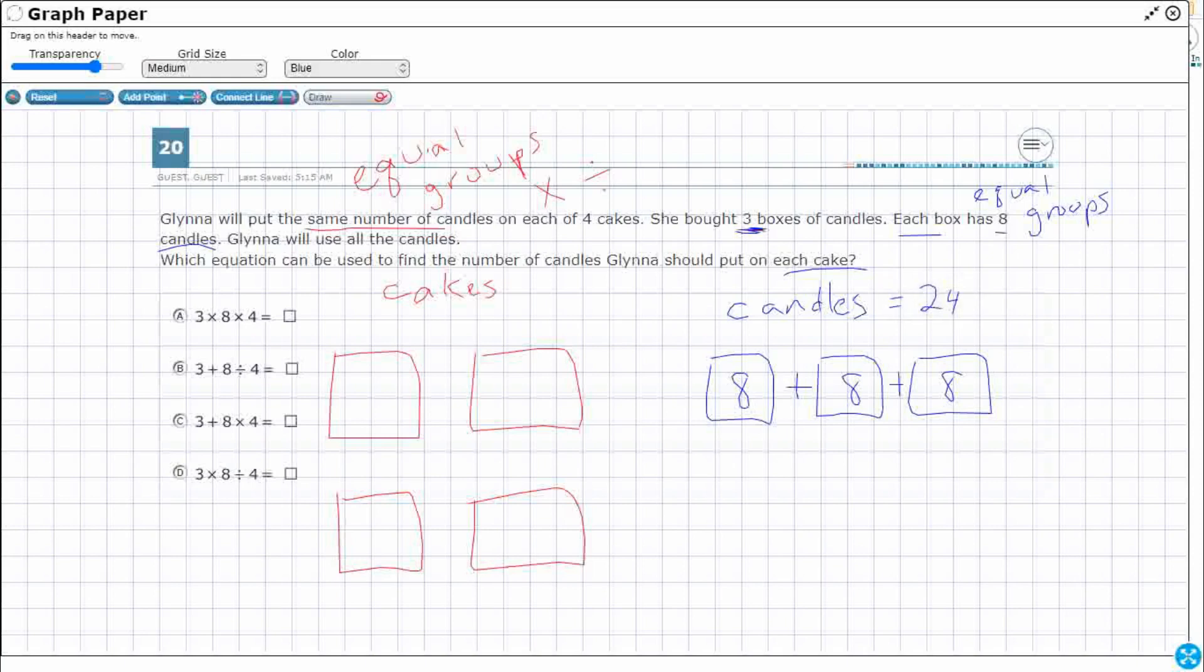If I want to do a strip diagram, I could do it like this. It's going to kind of look like my boxes right there. I've got eight, eight, eight, and there's my 24.